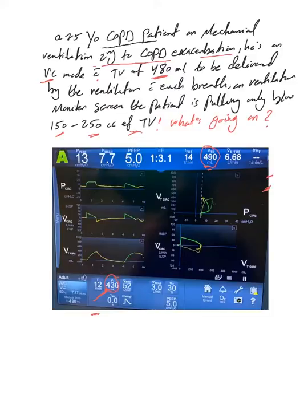So what I mean by this question is that here we said 480, and let's say this is the 480 here, and here what's being recorded is that the patient is getting only 150 to 250. So he was supposed to receive the 480, but what's going on?